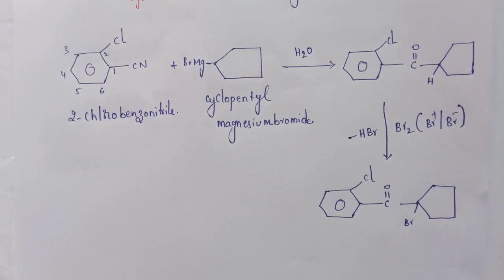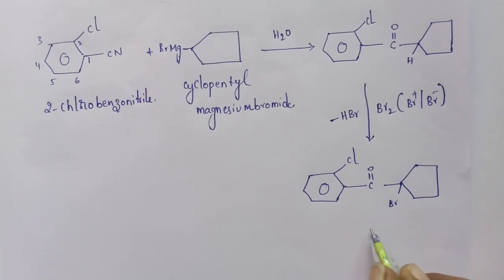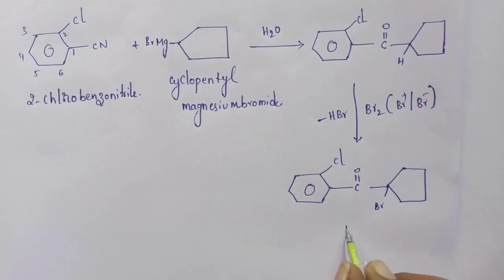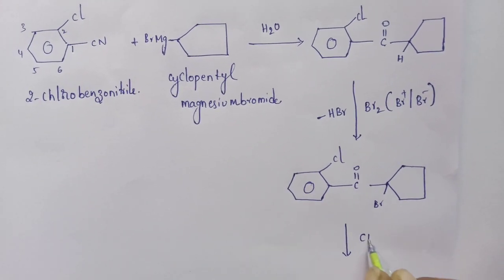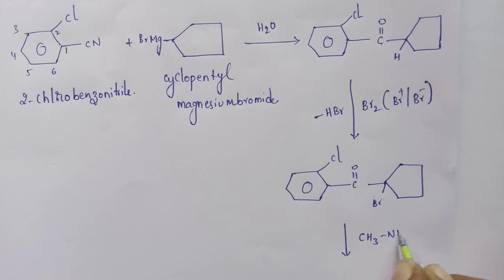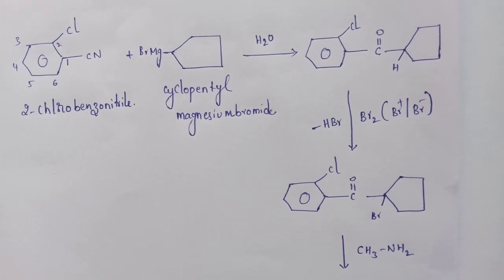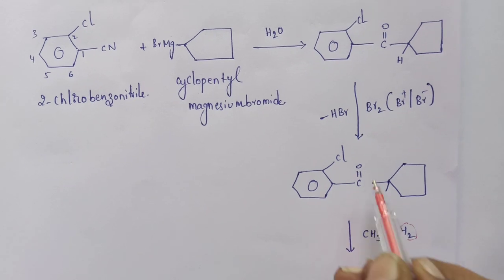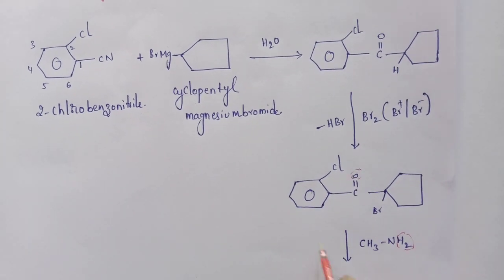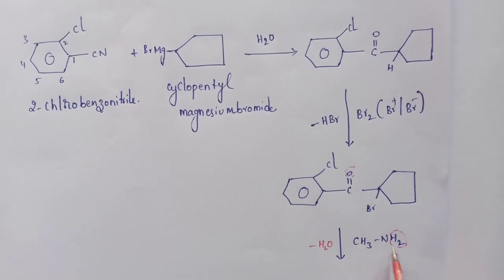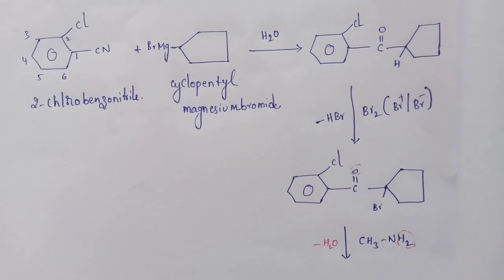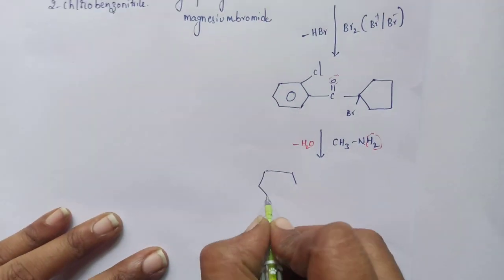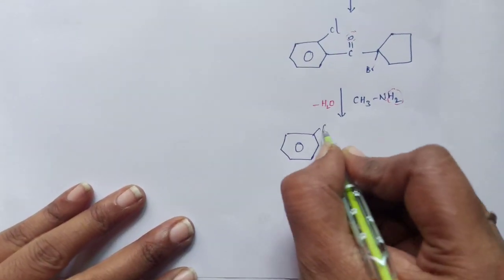In the next step, instead of a ketone we require an imine, so we treat with methylamine (CH₃NH₂). Upon treating with methylamine, H₂O is lost and nitrogen attaches to the double-bonded carbon, forming an imine intermediate with benzene, chlorine, C=N-CH₃, cyclopentyl, and the bromide.